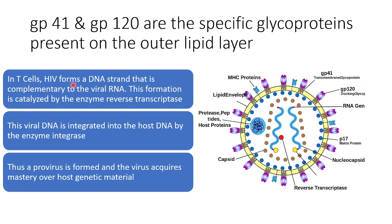HIV attacks T-lymphocytes, especially CD4 cells. In T-cells, HIV forms a DNA strand that is complementary to the viral RNA. This is called reverse transcription.